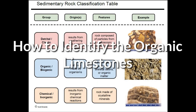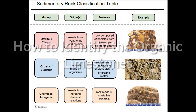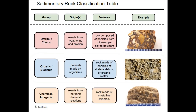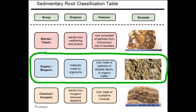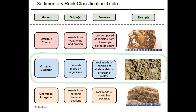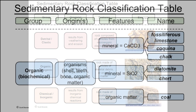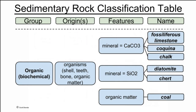The second group of sedimentary rocks are called organic because they're composed of materials made by organisms, as the name implies. There are a number of different types in this group. Let's look at one group of these organic sedimentary rocks.